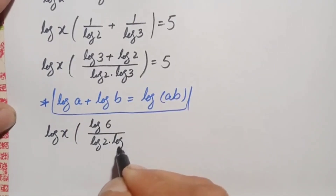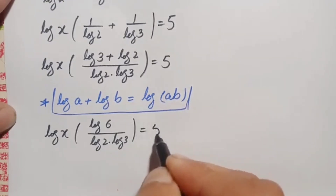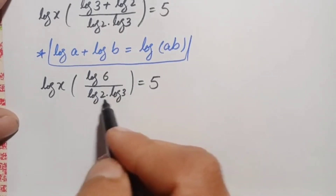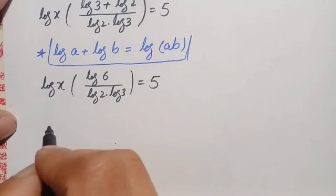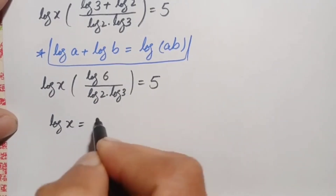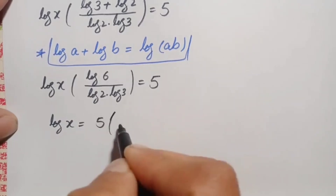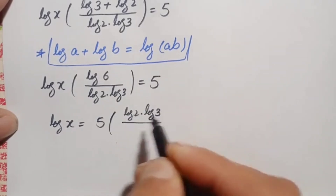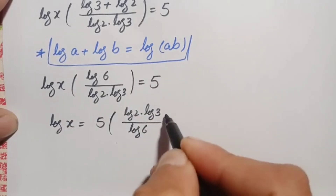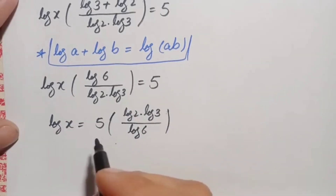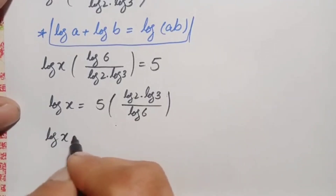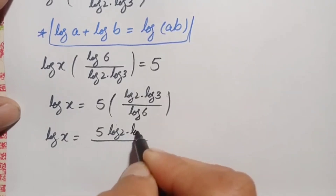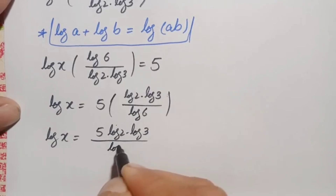We move the fraction to the right-hand side, taking its reciprocal. This gives us log of x is equal to 5 times log of 2 times log of 3 divided by log of 6. This is the key equation we will solve using two different approaches.